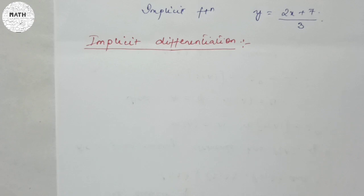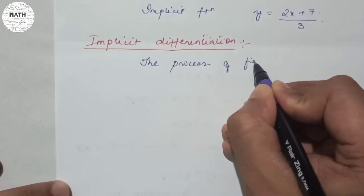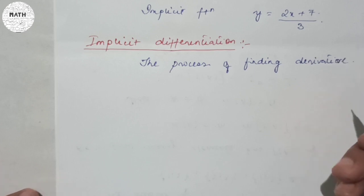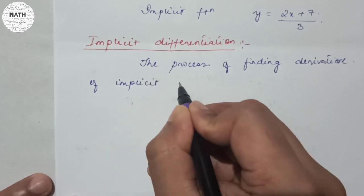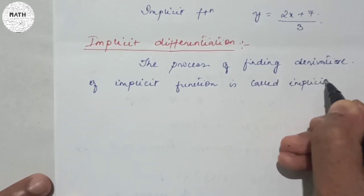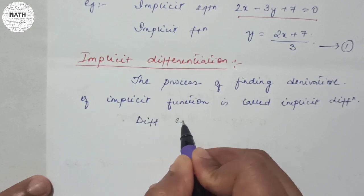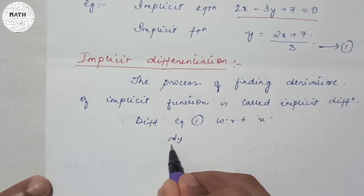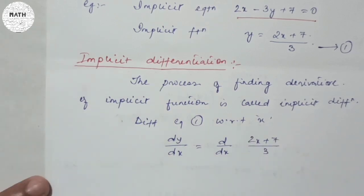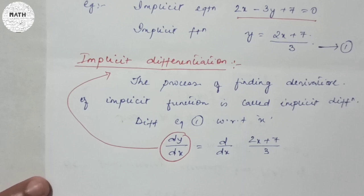After implicit functions comes implicit differentiation. Because we are dealing with differentiation, the process of finding the derivative of an implicit function is called implicit differentiation. So if we differentiate equation 1 with respect to x, we get dy/dx = d/dx of (2x + 7)/3. Finding the value of dy/dx is your implicit differentiation.